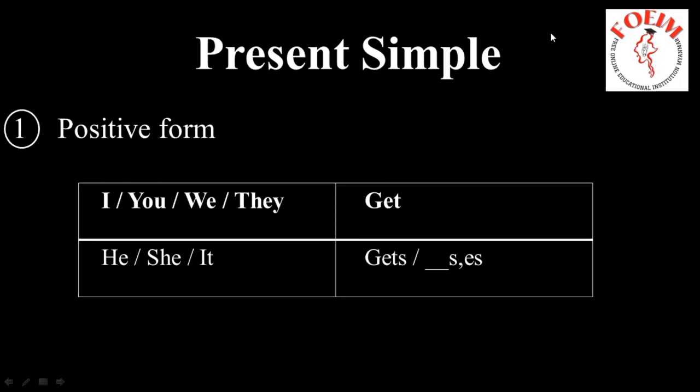Let's start with the forms of Present Simple. Firstly, the positive form of Present Simple. For I, you, we, they — we use the original form of the verb. For example: I get, you get, we get, they get.